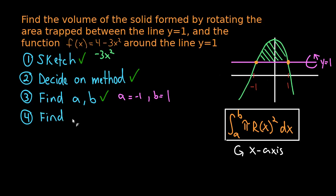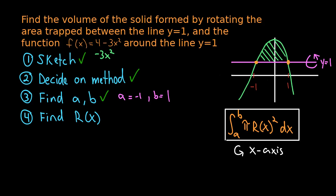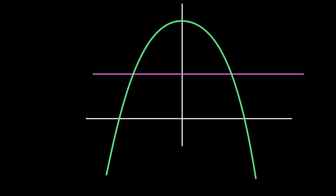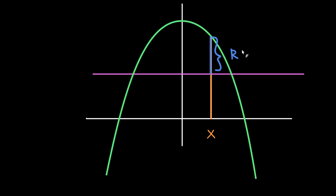Now comes the more interesting part: finding r(x). For that we'll look at a zoomed-in picture of the graph so we can label things nicely. To find r(x), pick an arbitrary x value somewhere in the area, then draw a line from the axis of rotation up to the outer edge of the area. That line segment, labeled r(x), is what we're after.